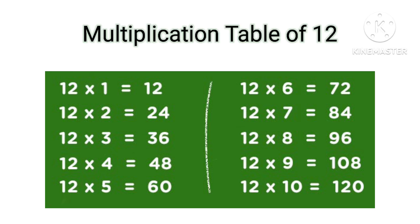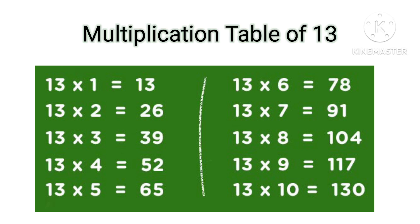Table of 12: 12×1=12, 12×2=24, 12×3=36, 12×4=48, 12×5=60, 12×6=72, 12×7=84, 12×8=96, 12×9=108, 12×10=120.